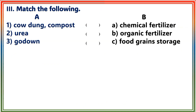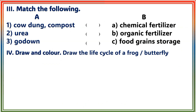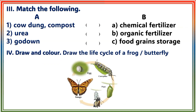Section 3: Match the following. 1. Answer B: Organic Fertilizer. 2. Answer E: Chemical Fertilizer. 3. Answer: Food Grain Storage.